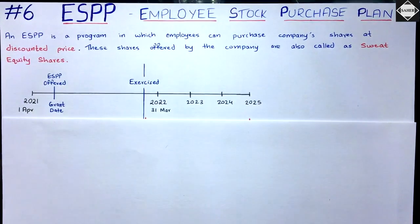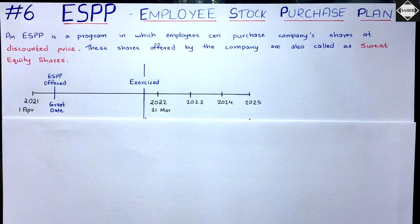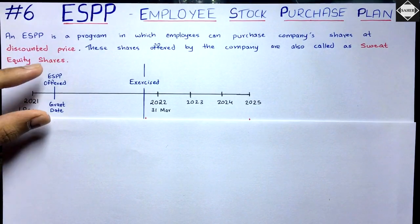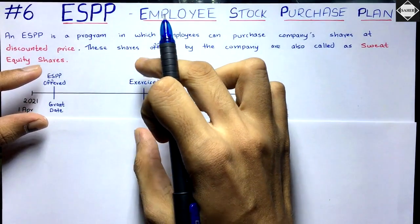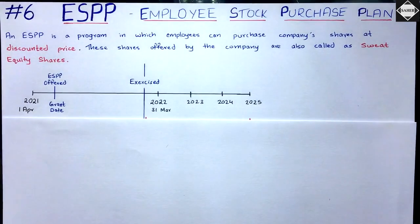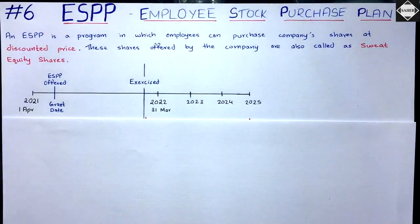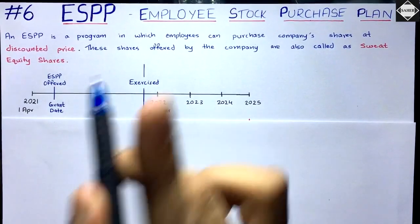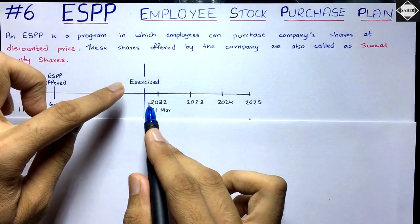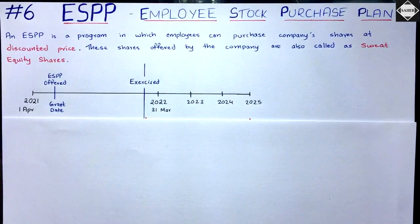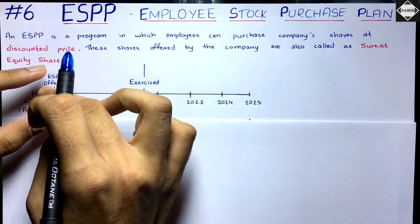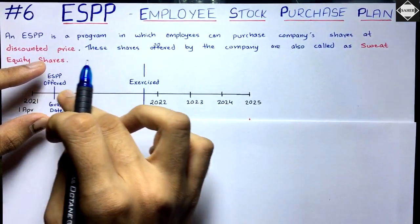Another important point to identify ESPP questions in the exam: ESPPs are offered and exercised in the same year. When you see a question where the ESPP is offered and exercised in the same year, you can immediately identify it as an ESPP question. So granted date and exercise date happen in the same year — that is a key differentiator from ESOP.